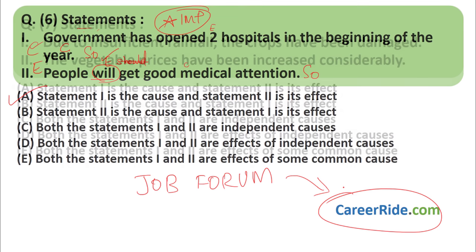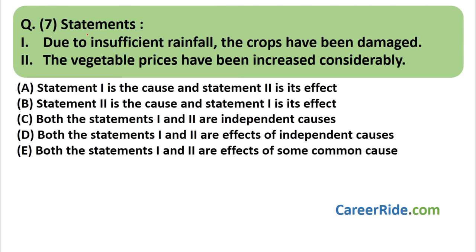Question number seven. Statements: (1) Due to insufficient rainfall, the crops have been damaged. (2) The vegetable prices have been increased considerably. Combining: 'Due to insufficient rainfall, crops have been damaged, so the vegetable prices have been increased considerably' — this makes sense. The reverse does not. Answer is A — statement one is the cause, statement two is its effect.